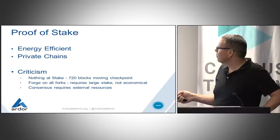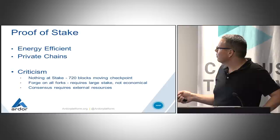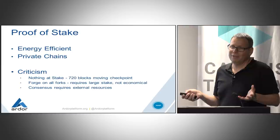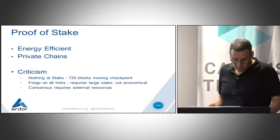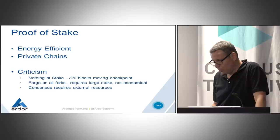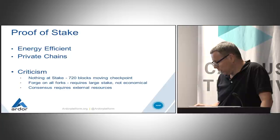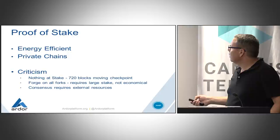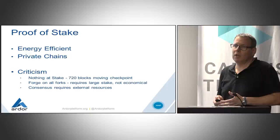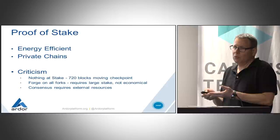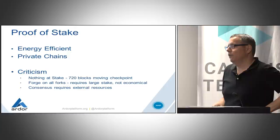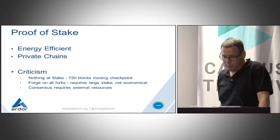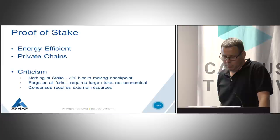Two major advantages of proof of stake: first, it's energy efficient — you don't need to run miners calculating SHA-256 or any other hashing function for securing and generating blocks. Instead, you follow relatively simple calculations. Another very nice use case is for private blockchains. It doesn't make sense to place miners on the desktops of people using a private blockchain. With proof of stake, you can control the power of each participant by providing them a relative stake in the total amount of tokens.